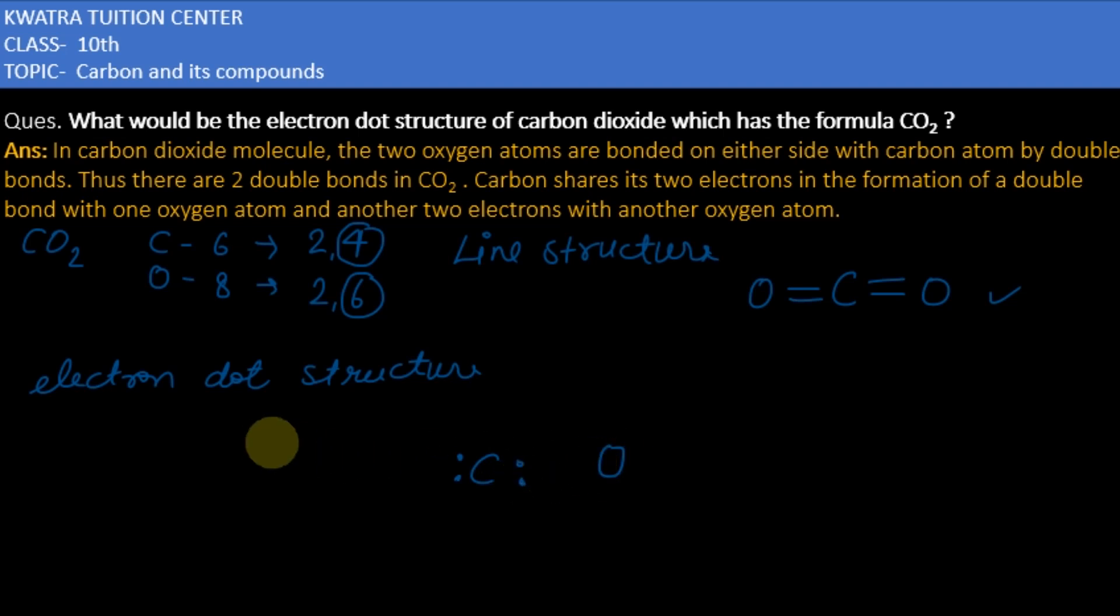Now let's come to oxygen. So there are 2 oxygen atoms and I will represent the electrons of oxygen by cross. So there are 6 electrons: 1,2,3,4,5,6 on each oxygen atom. Now bonding will be like this.